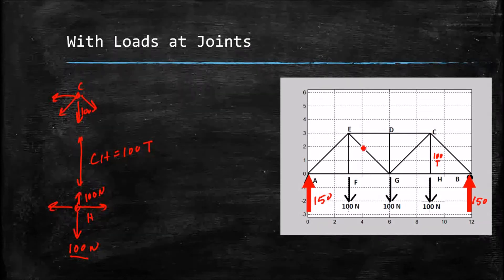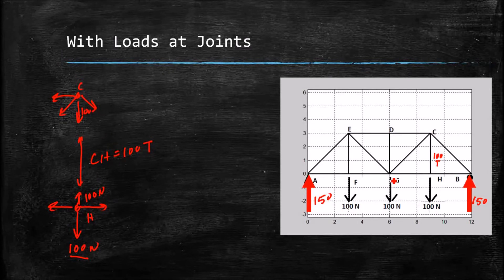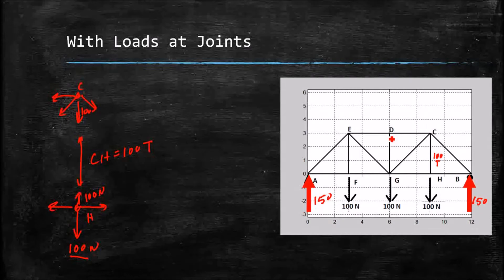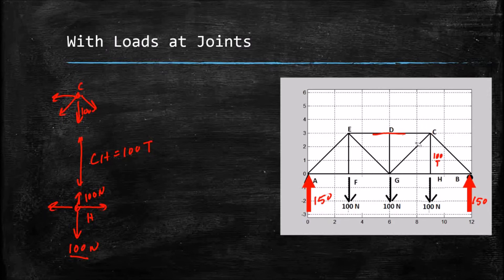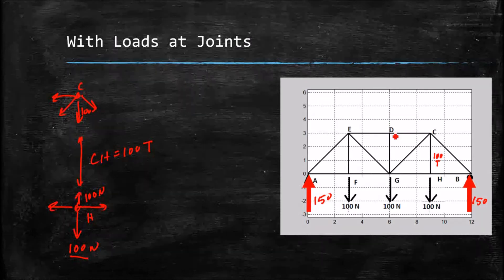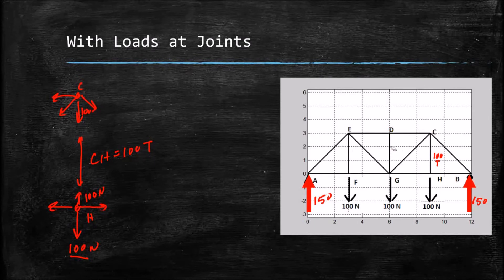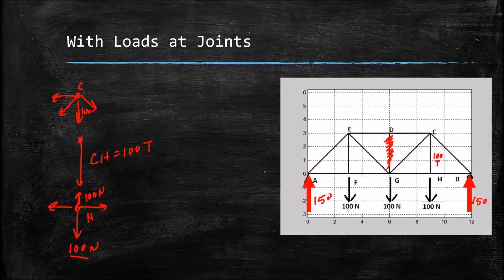Even though we have a load at one end of DG, if we look at the other end, it ends in a straight corner with no forces that have a Y component. For DG to be in equilibrium, the Y forces must equal zero, so DG is still a zero force member and can be removed. This won't affect our method of joints analysis at point C, but it can still be removed.